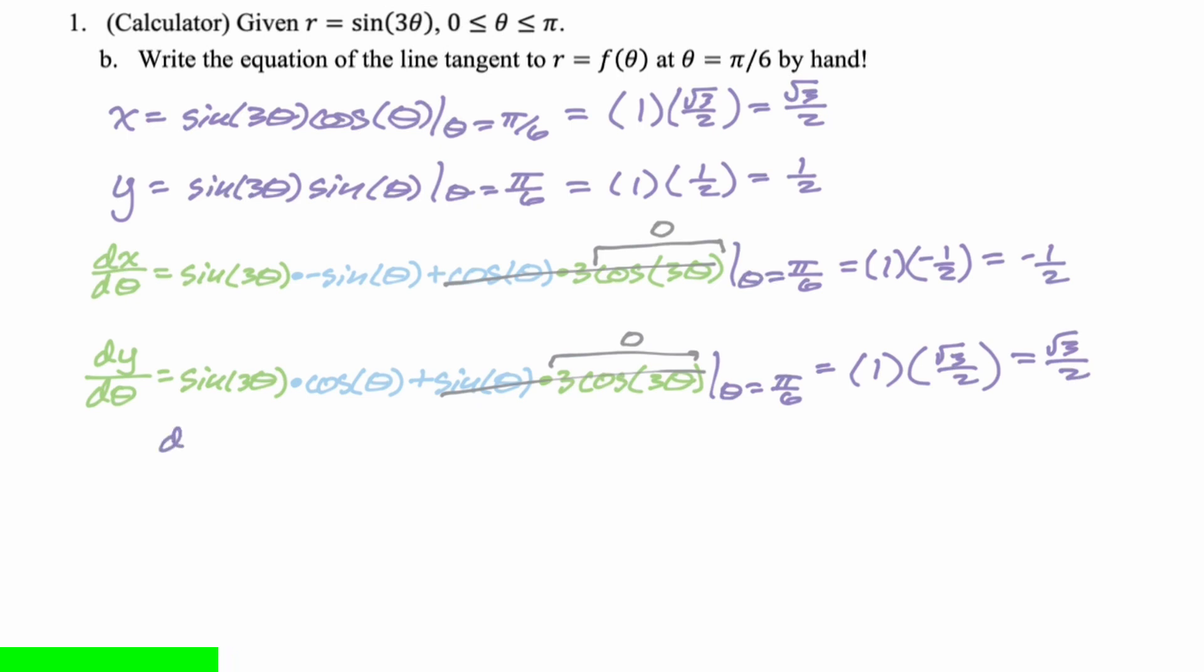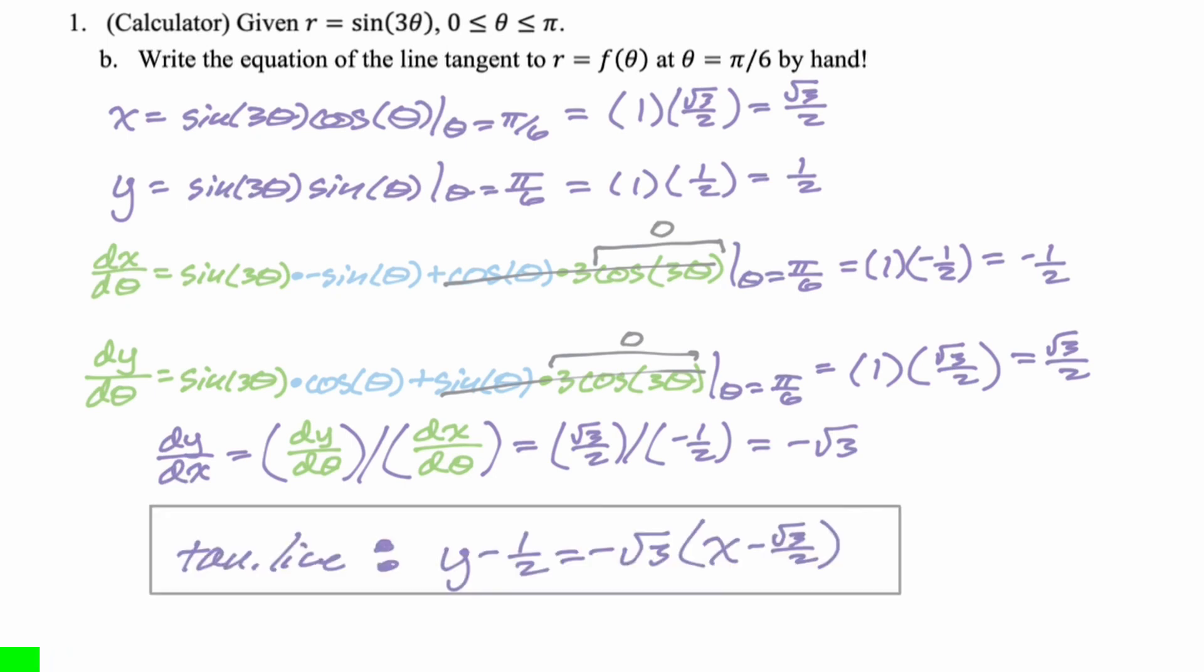But of course, we have to find dy dx. dy dx is dy d theta divided by dx d theta. Just parametrics at this point. dy d theta we found was root 3 over 2. Make sure you don't accidentally flip these. I see that all the time. In fact, I do it occasionally. It's like whichever one you find first, you tend to put in the numerator. Don't be that person. So root 3 over 2 divided by negative 1 half is negative root 3. And then we're going to write the tangent line in point slope form. y minus 1 half equals negative root 3 quantity x minus root 3 over 2. Let's take a look at the next part.